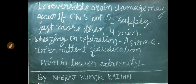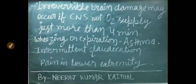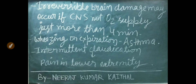Irreversible brain damage may occur if the central nervous system is not getting oxygen supply for more than 4 minutes. Wheezing on expiration is seen in asthma patients — this is an important sign of asthma. Intermittent claudication means pain in the lower extremities.